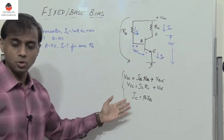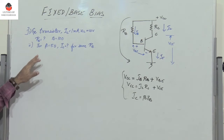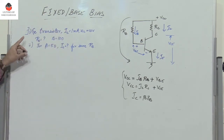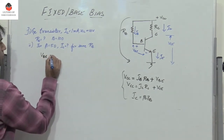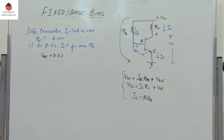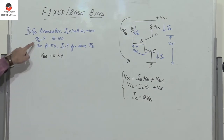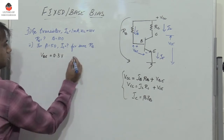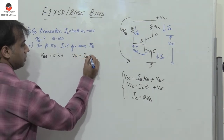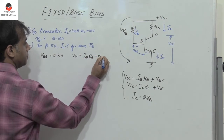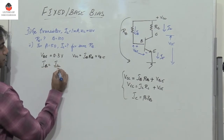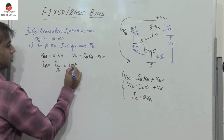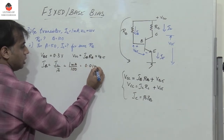These are the expressions needed to solve any problem related to fixed or base bias. Since the transistor is germanium, VBE is 0.3 volts. To find RB, we use the base loop expression: VCC equals IB times RB plus VBE. IB is not directly known, but IB equals IC divided by beta, which is 1 milliampere divided by 100, giving IB equal to 0.01 milliampere.